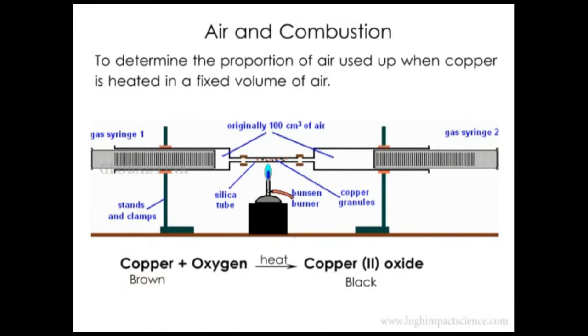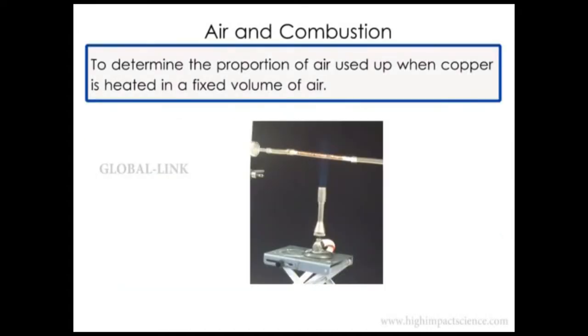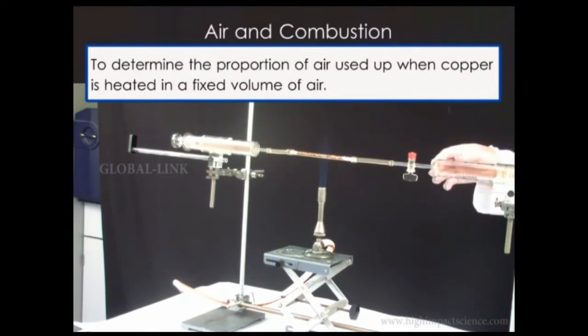We set up the experiment like this: we light the Bunsen burner and heat the tube with the copper powder inside. We then start moving the syringe to and fro about 50 times to pass air over the heated copper.